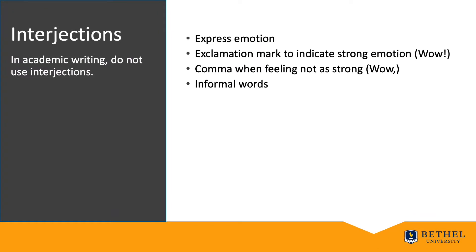Interjections are words that express emotion. An example is the word 'wow,' followed by an exclamation mark, or 'wow,' followed by a comma when the feeling is not as strong. Interjections are informal words, so in academic writing, do not use interjections.